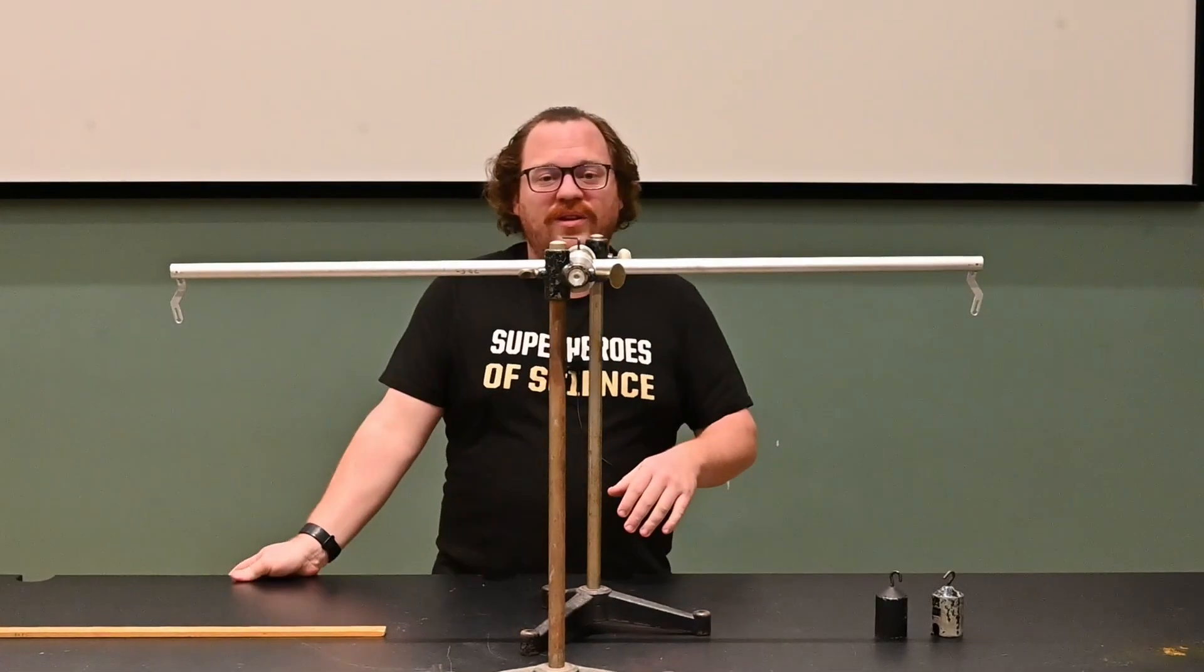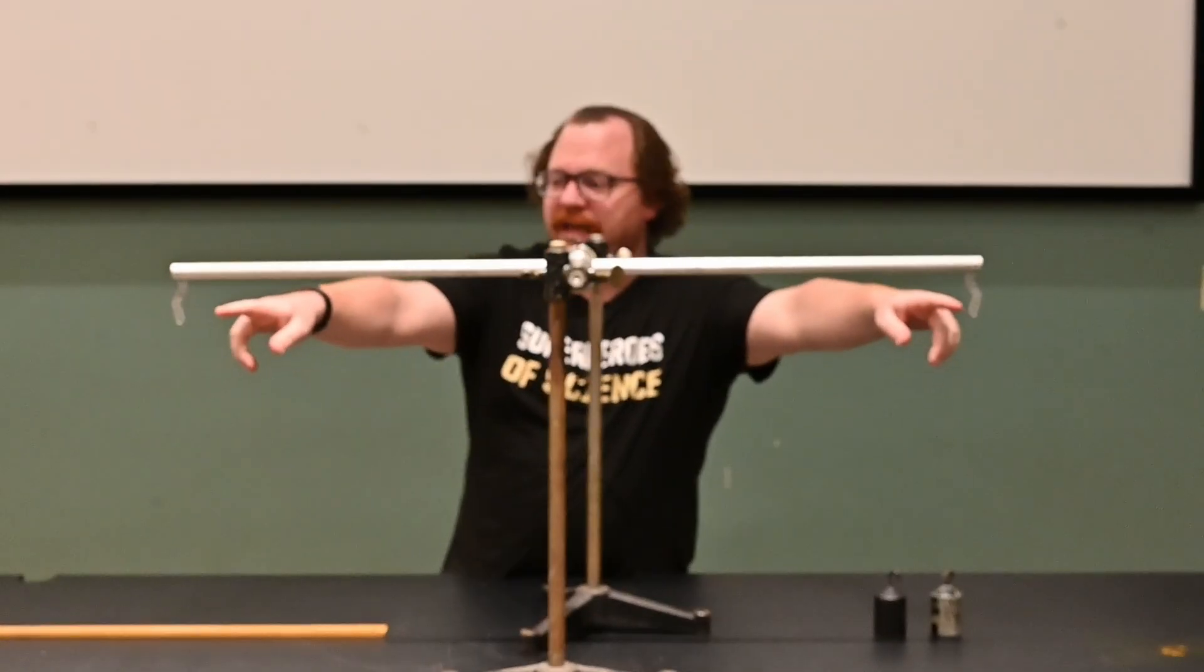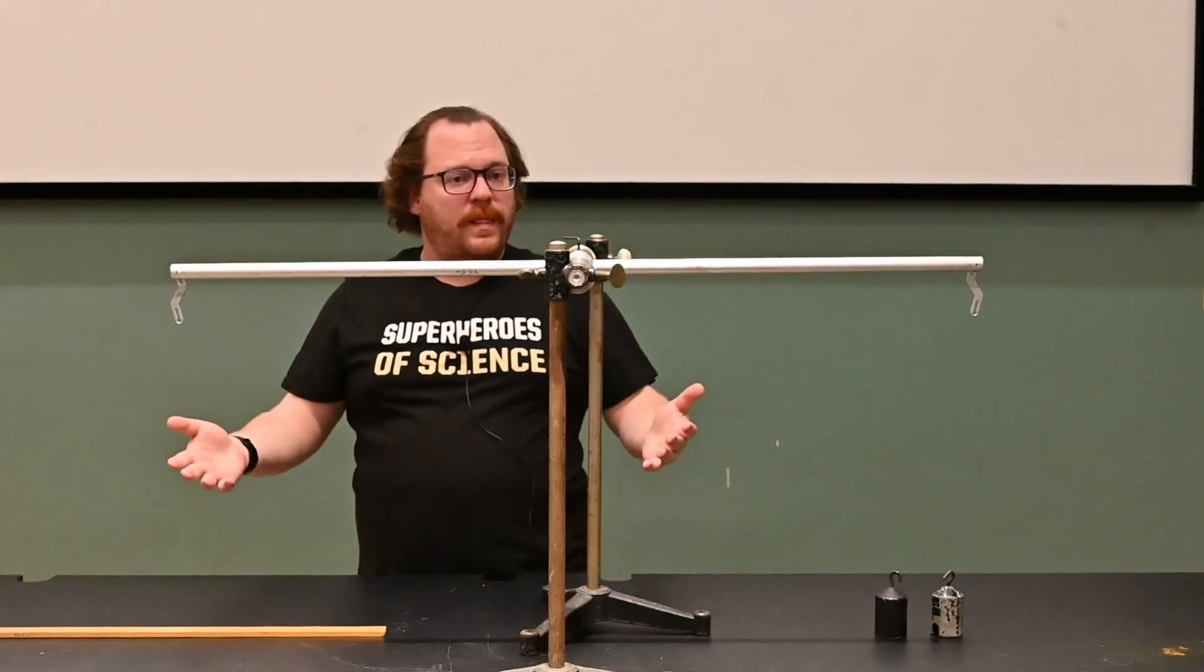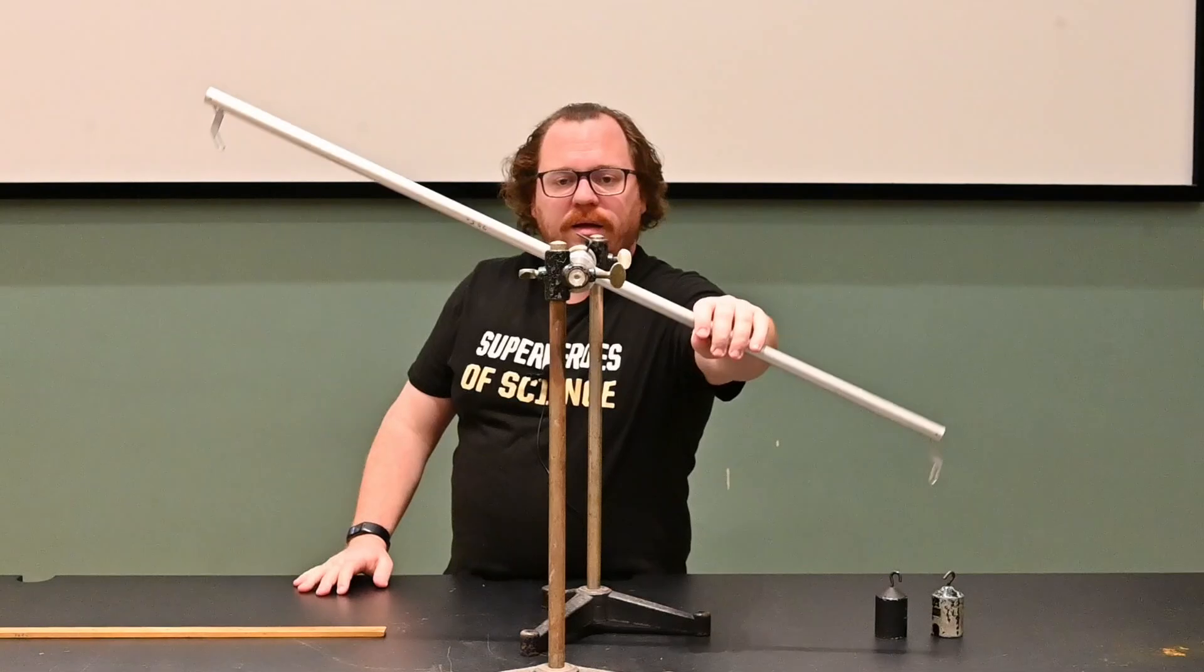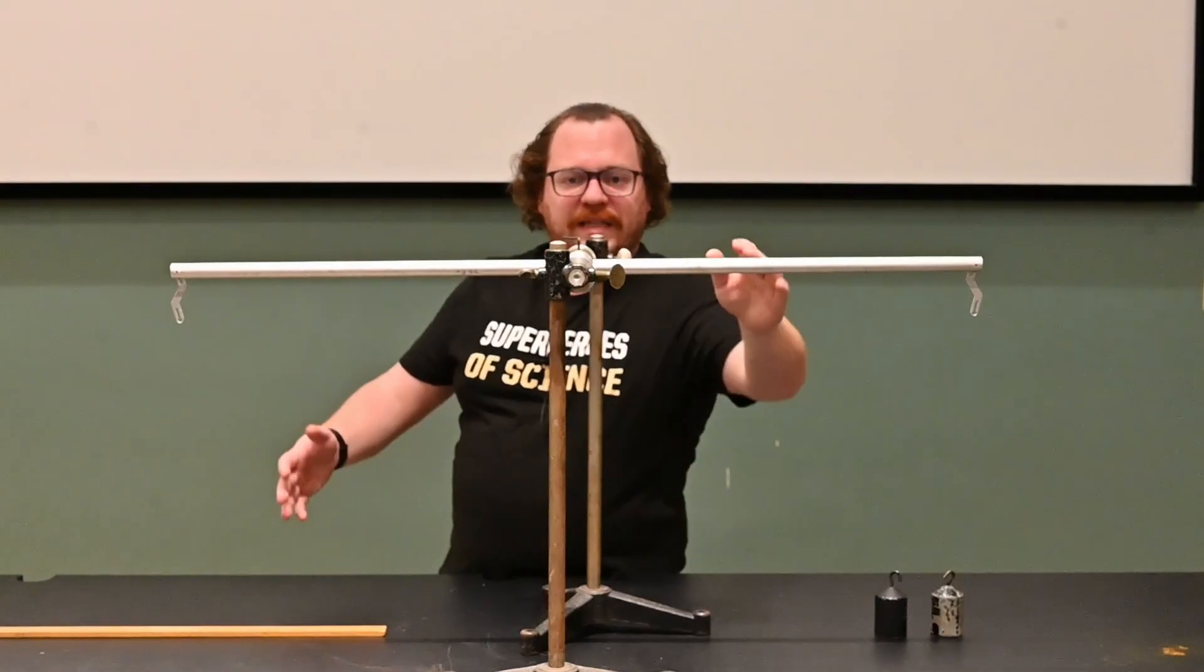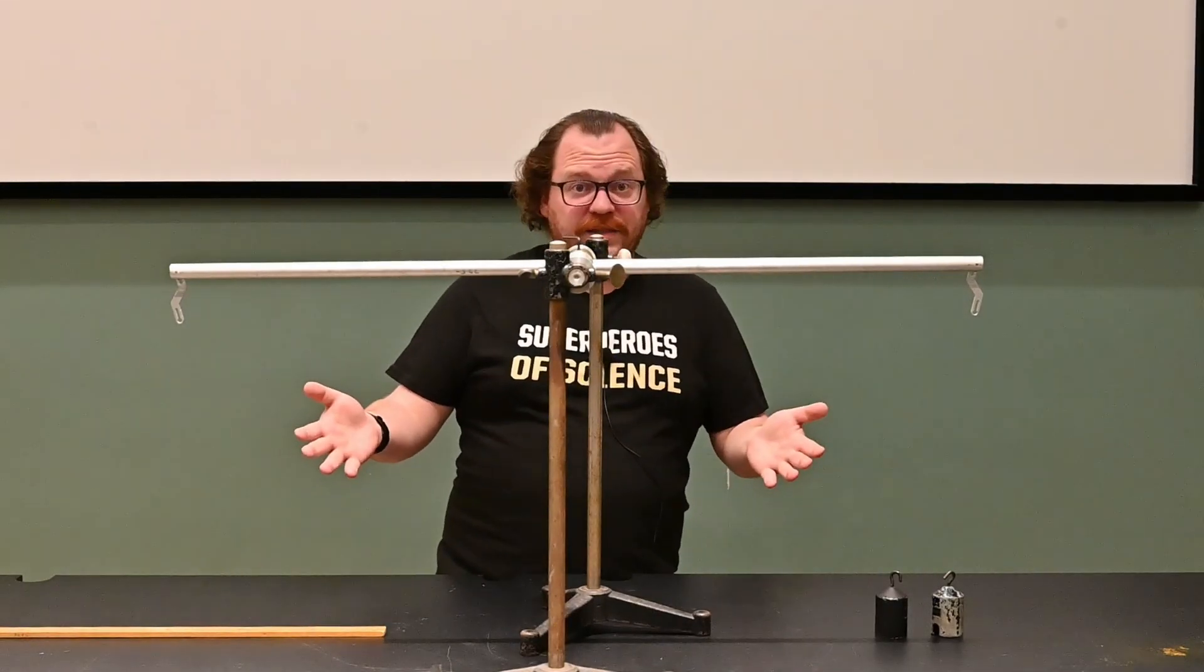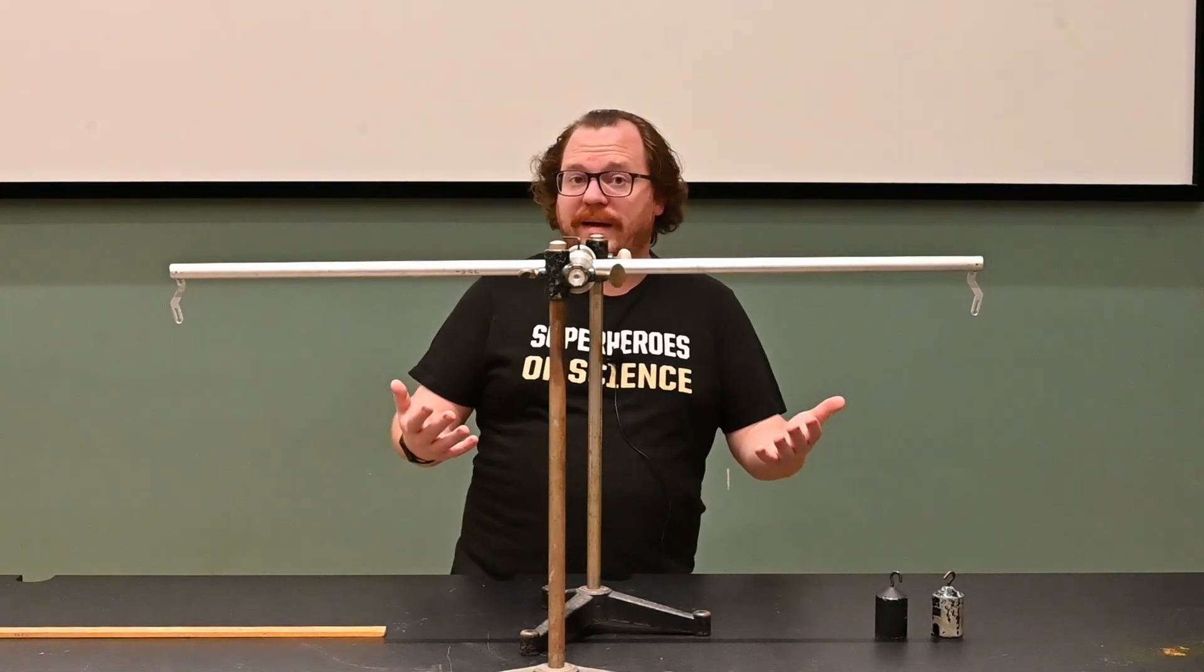For this demonstration, what we're looking at is a balance arm. I have an aluminum arm with two hooks at the end so I can attach weights to them, and it can pivot back and forth. Right now, I don't have any weights in it, and it is already balanced, which hopefully makes sense.